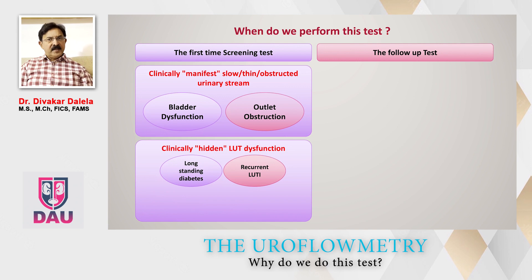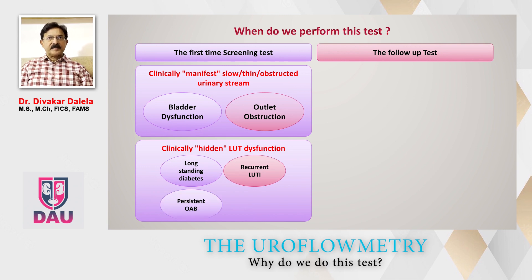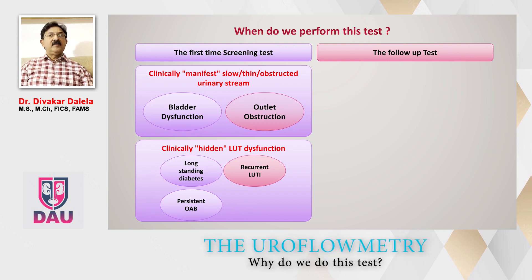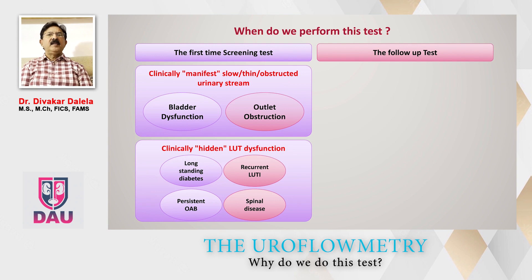There are also patients with recurrent lower urinary tract infection — men, women, and children — in whom you suspect outflow obstruction, and uroflowmetry helps diagnose that hidden bladder outflow obstruction. Patients with persistent overactive bladder who have frequency, urgency, and nocturia and do not respond to treatment may also have bladder outflow obstruction as a causative factor. Additionally, patients with spinal or brain neurological disease may have concurrent lower urinary tract dysfunction warranting a uroflowmetry test.